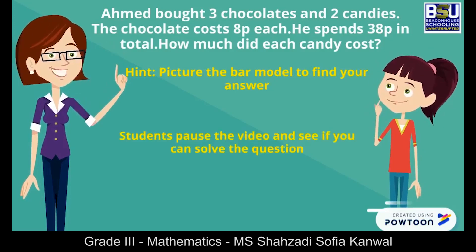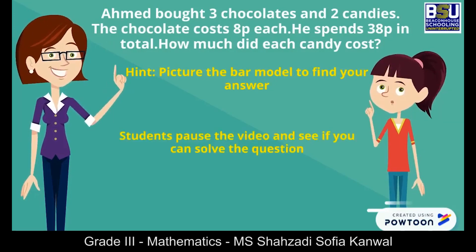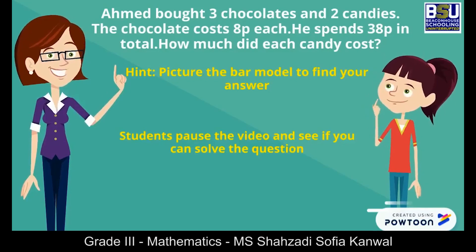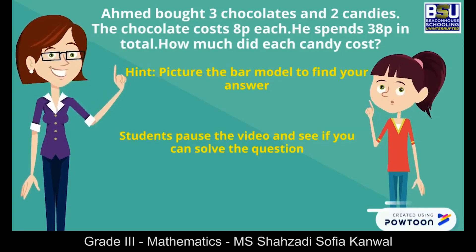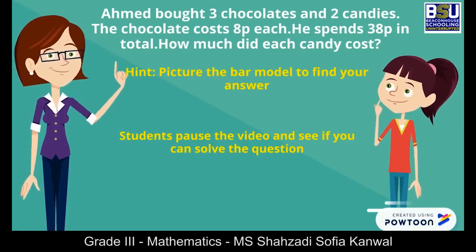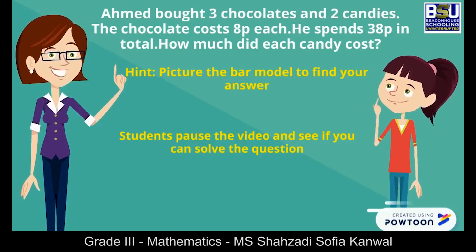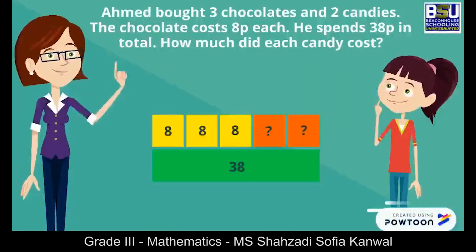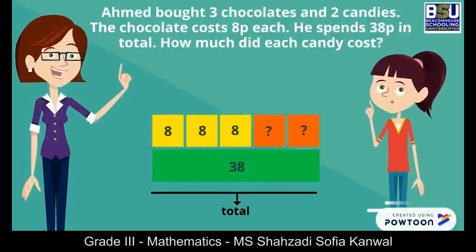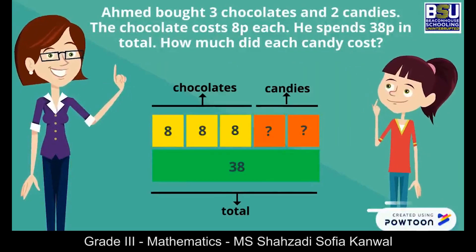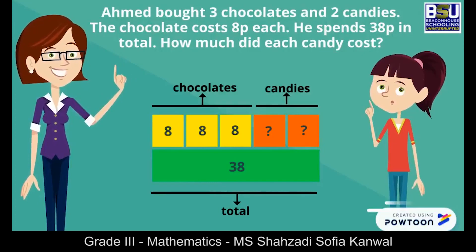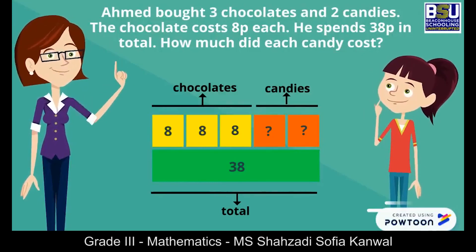Students, pause the video and see if you can solve the question using the bar model. Great, you are back. Let's solve this together. The lower bar is the total cost and the upper bar is the cost of the 3 chocolates and 2 candies he bought.